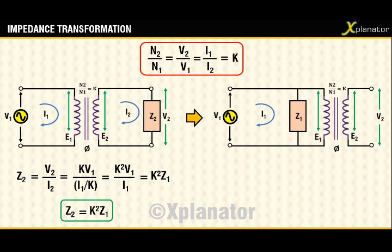Hence the impedance which appears as z2 in the secondary can be written as z1 in the primary, but its value will be given as z2 divided by k². This z1 is also called the reflected impedance.